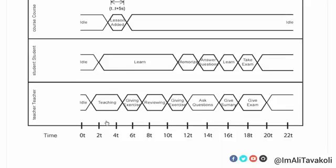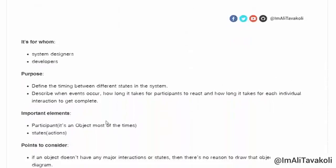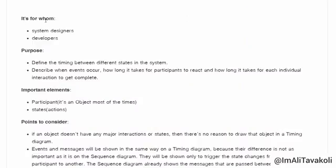Here is the alternative notation for a Timing Diagram — it is the same as the first one, and it is up to you which notation you prefer. Before we get into more details, let's see for whom the Timing Diagram is: it's for System Designers and Developers. Its purpose is to define the timing between different states in the system, describe when events occur, how long it takes for participants to react, and how long each individual interaction takes to complete.